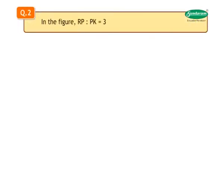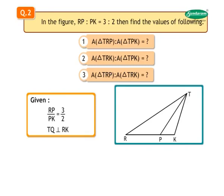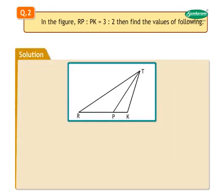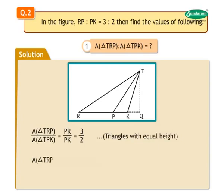Question 2. In the figure, RP to PK is equal to 3 is to 2. Find the values of the following ratios. It is given that RP upon PK equals 3 upon 2. Solution: Extend side RK and draw a perpendicular from T to side RK meeting at point Q, so TQ is perpendicular to RK. Number 1: Find the ratio of area of triangle TRP upon area of triangle TPK. Area of triangle TRP upon area of triangle TPK equals PR upon PK equals 3 upon 2, as they are triangles with equal height. Thus, the ratio of areas of triangles TRP and TPK is 3 is to 2.